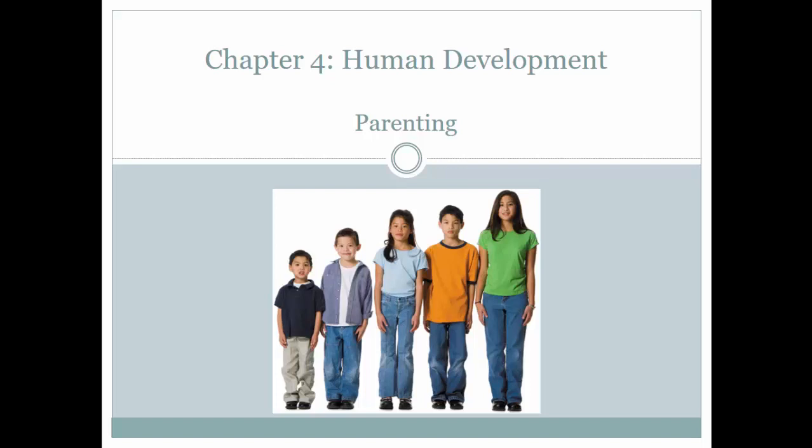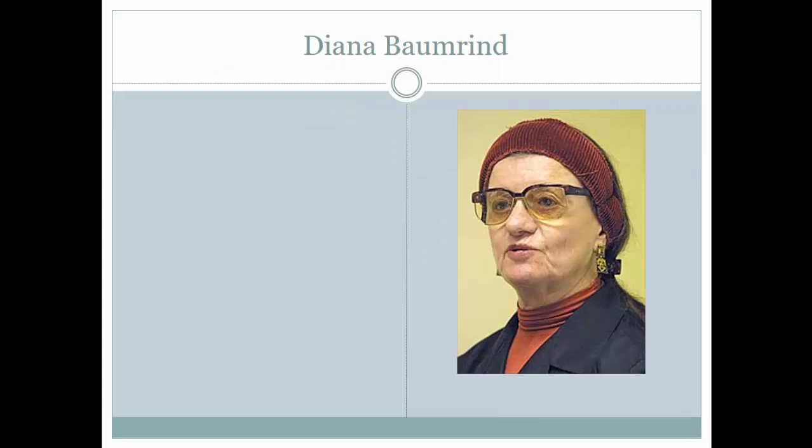One of the big names in parenting is a psychologist named Diana Baumrind. She's famous in the parenting literature because she developed these classifications of parenting styles. There's been a ton of research on how these different styles have influenced children over the lifespan.